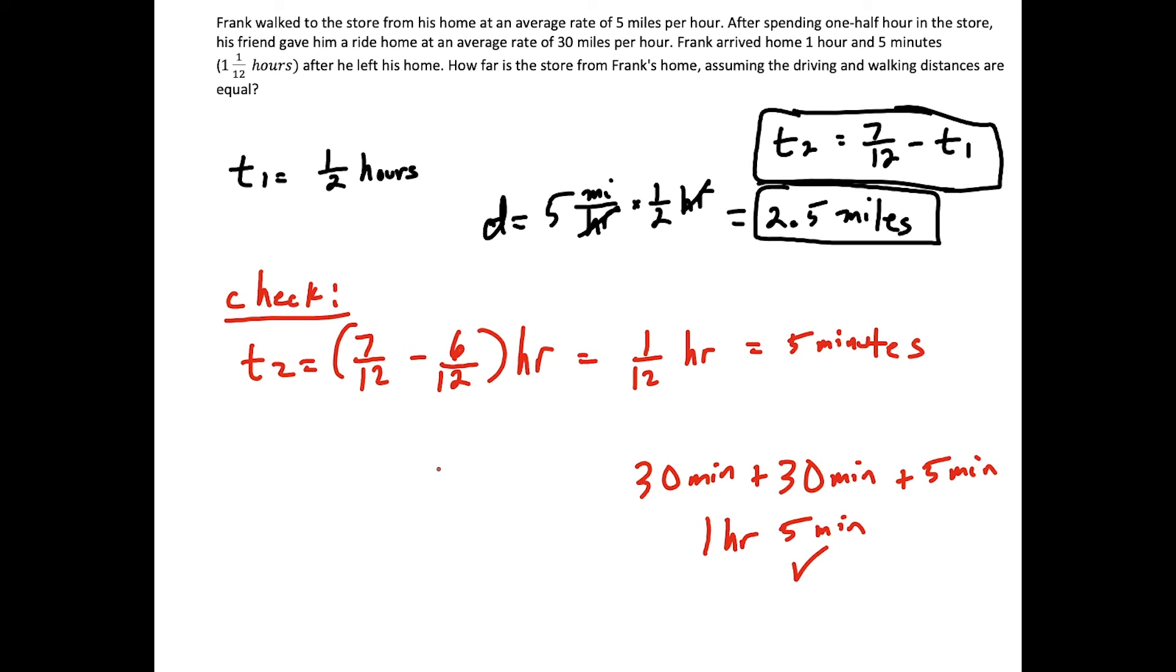But what should also check out here is the other rate. His friend drives at a rate of 30 miles per hour. And his friend is driving for one twelfth of an hour. So that was T2, is one twelfth of an hour. So if you want to check that the distances match, well, if we multiply 30 miles per hour, times one twelfth of an hour, see the units cancel and then 30 divided by 12 is also 2.5. So the 2.5 miles appears twice. So that confirms that the store, the distance from the store to Frank's home is in fact, two and a half miles.